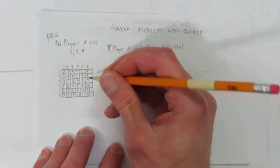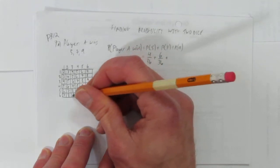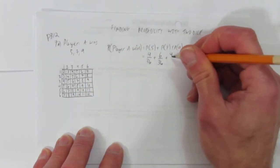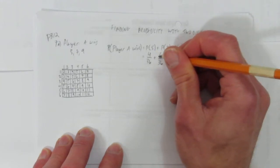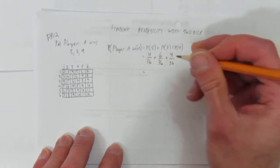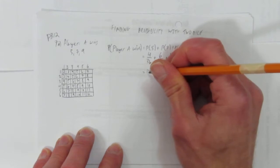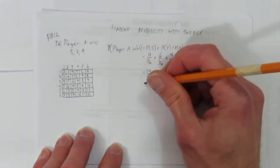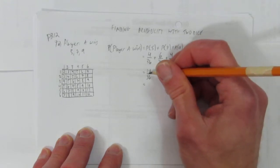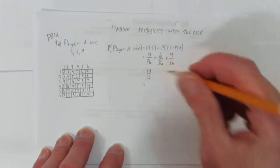And what's the probability of rolling a 9? There's 1, 2, 3, 4 ways to roll a 9 out of 36 total ways. So 4 plus 6 plus 4, that means there are 14 ways out of 36 that player A could win. In other words, the probability is 14 over 36.